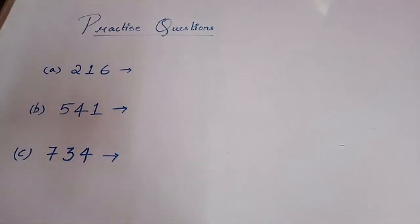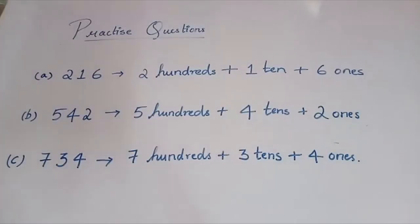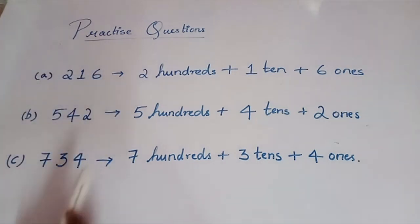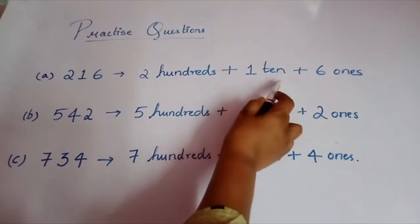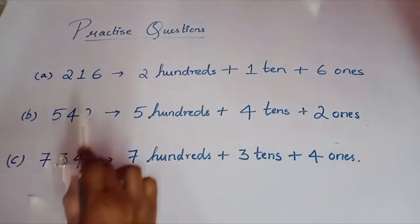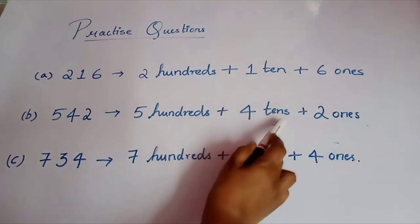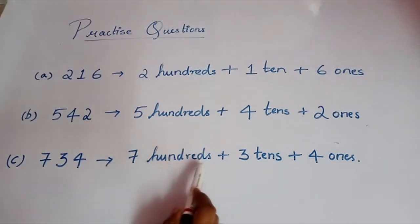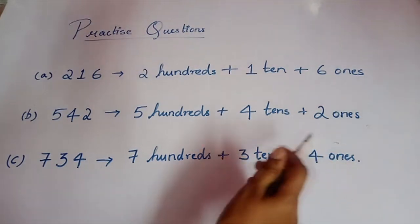Now I will give you some practice questions — 3 questions. Try to do it yourself and then check the answers. The first one was 216: 2 hundreds plus 1 ten plus 6 ones. The second one, 542: 5 hundreds plus 4 tens plus 2 ones. And finally, 734: 7 hundreds plus 3 tens plus 4 ones.